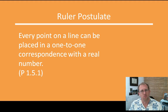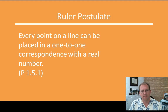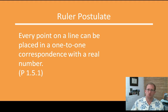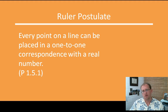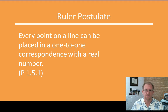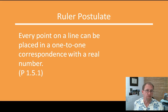The first idea is a ruler postulate, and you know how to use a ruler. Every point on a line can be placed in a one-to-one correspondence with a real number. So you can use a line as a ruler and look at the distance between two points. Every point along the line corresponds to a number — 1, 2, 3, 4, or 1.5, 1.6, 1.7 — and depending on what scale you use, every point can represent an actual number and a distance from the point of origin.